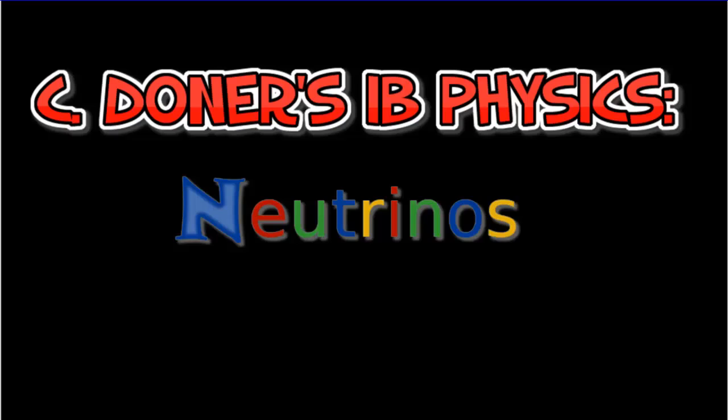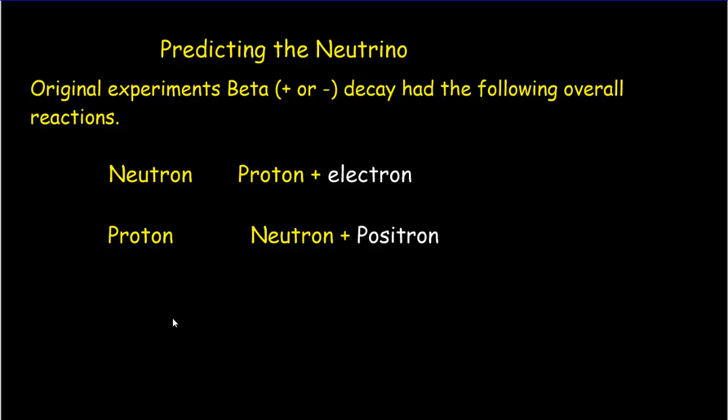Let's have a look at neutrinos and how and why they were originally postulated. You'll recall that there's two types of beta decay.